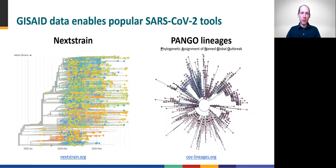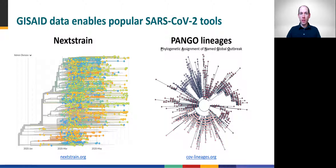Whether or not you're familiar with GISAID, you've likely already encountered some benefits of the EpiCoV database, because certain applications popular for monitoring SARS-CoV-2 evolution and genomic epidemiology depend on these data. For example, many public NexStrain trees, including those maintained by the CDC Spheres Consortium, are calculated with sequences pulled directly from GISAID. Similarly, PANGO lineage definitions, which are often used to describe notable SARS-CoV-2 variants, are also calculated using a collection of GISAID sequences. It's likely because of these tools that many SARS-CoV-2 sequence data continue to be preferentially submitted to that repository.